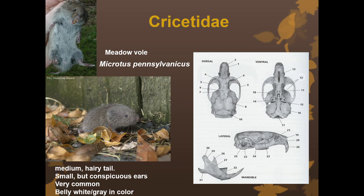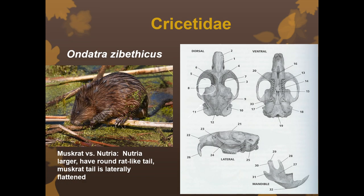Next we have our meadow vole, Microtus pennsylvanicus. They have a medium hairy tail — like all Cricetidae, there is hair on the tail. They're a really common species with small but conspicuous ears; while the ears are small, you can still see them when you have the animal in hand, though not as pronounced as in the southern red-backed vole. The belly is white and gray in color. This is one of the more common voles you'll actually catch.